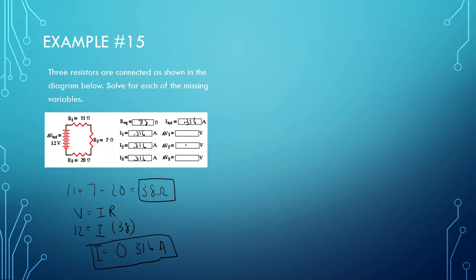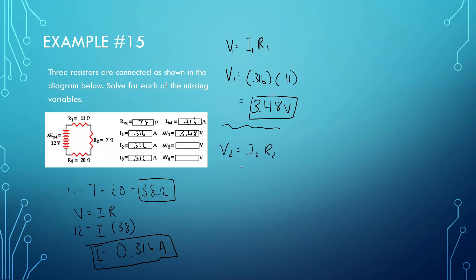Now that we have the current, we can find the voltage across each resistor. V1 equals I1 times R1 — the current is 0.316 and R1 is 11, so 0.316 times 11 gives us 3.476, which we'll round to 3.48 volts. Next, V2 equals I2 times R2 — I2 is 0.316 and R2 is 7, so 7 times 0.316 gives us 2.21 volts.